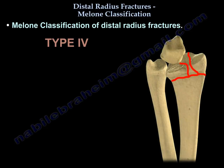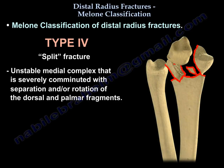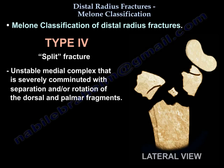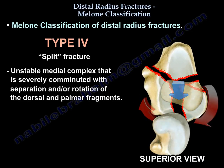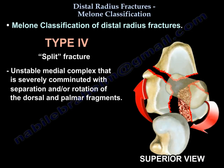Type four is a split fracture. It is unstable, and the two fragments — the dorsal and the volar parts of the die punch fracture — are rotated completely. This fracture usually needs ORIF.